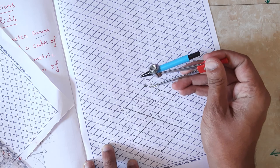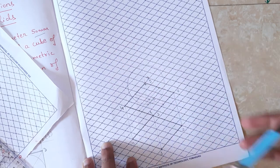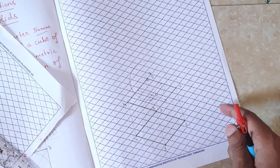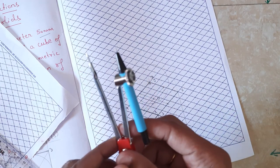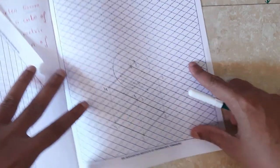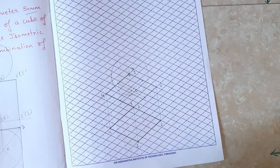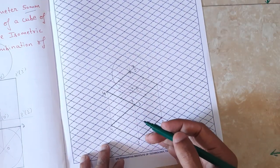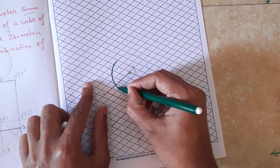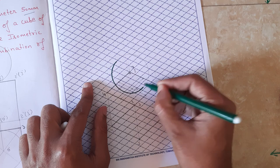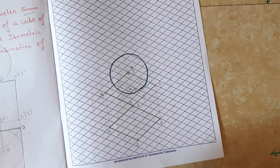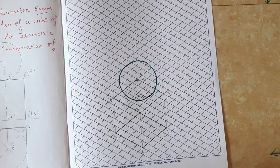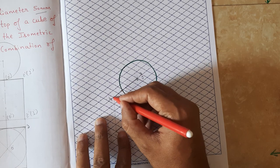To locate the center we take iso measurement, whereas to draw the actual circle it must be the actual radius. Now it is time to determine which edges are visible and which are not. We go from top to bottom. The sphere is completely visible and must be drawn dark. The sphere must be dark. It is resting on top of the cube, and from here to here it is visible.